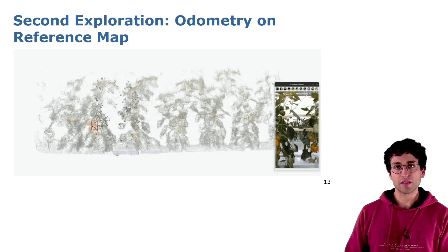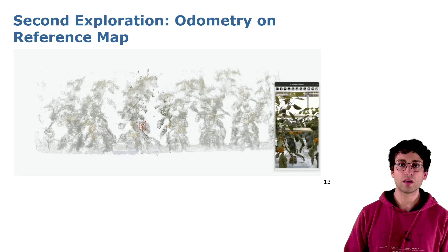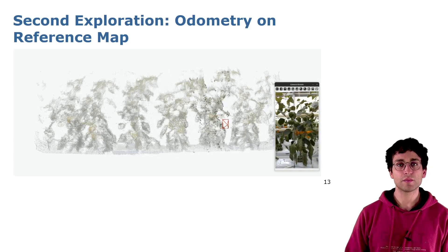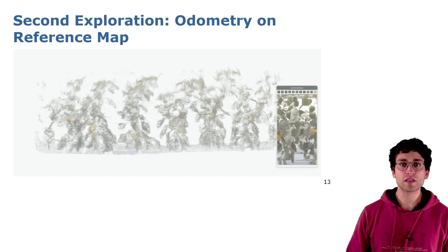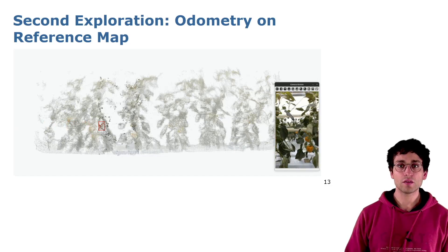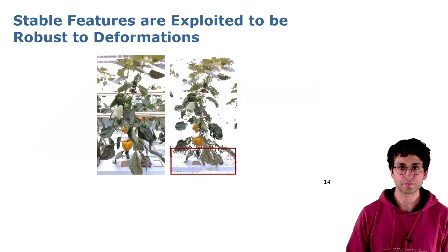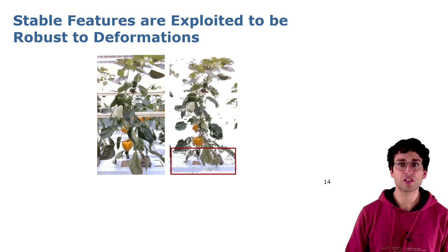Imagine that we go again in the same field some days later and we want to understand the changes that occurred in the meantime. To achieve this, we need to estimate the robot's pose relative to the reference map from some days ago. This step is crucial for aligning the new observations with the previous ones, useful for the next steps in our pipeline. In this way, we have for each frame an idea of which part of the environment we are watching. Given that plants change over time, we focus on stable features like plant stems for robust pose estimation, avoiding errors that could arise from changing leaves and fruits.